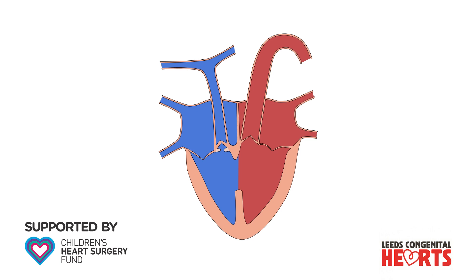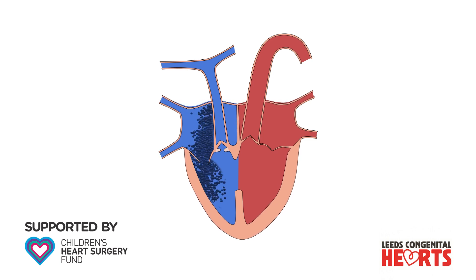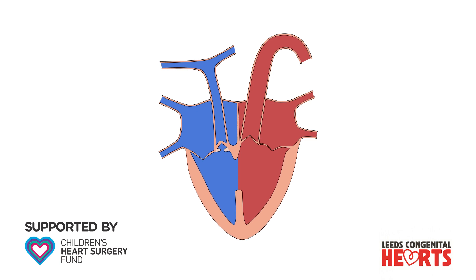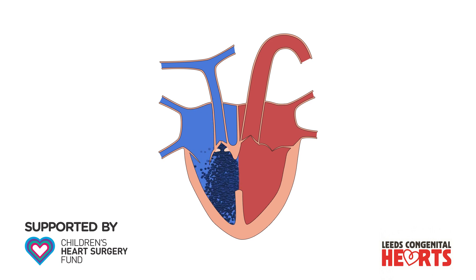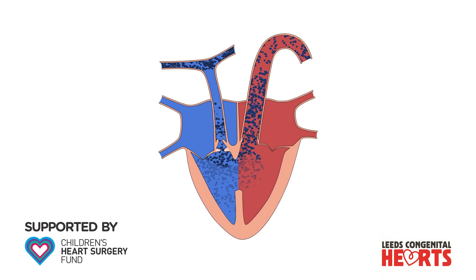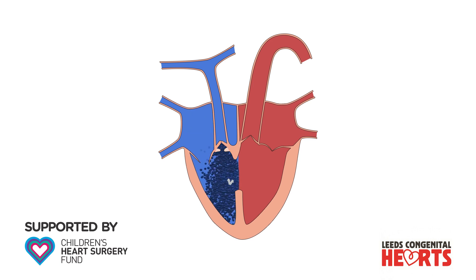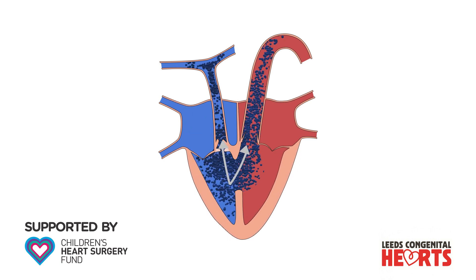The abnormalities in Tetralogy of Fallot affect the way blood flows through the heart. Blood that is low in oxygen enters the right atrium from the veins, and then moves to the right ventricle as normal. However, the obstruction to blood entering the pulmonary arteries means that some blood is forced through the ventricular septal defect into the aorta. This means that some blood that has low levels of oxygen is pumped to the body rather than to the lungs.